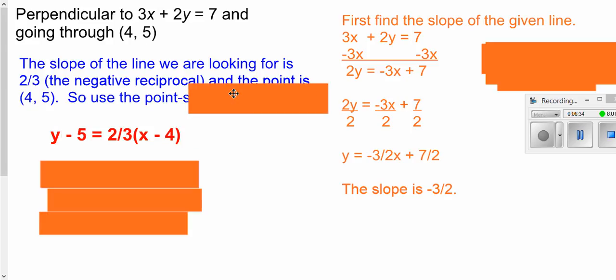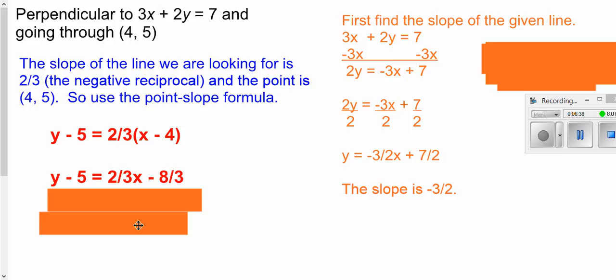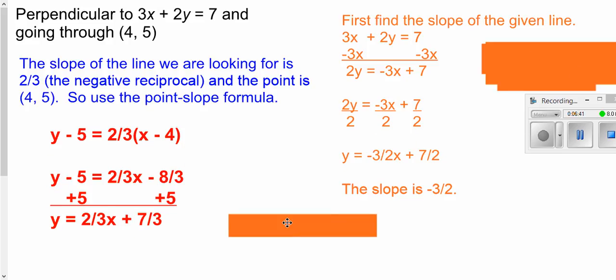So I have a point and the slope so once again I use my point-slope formula, distribute through, solve for y and I get my answer.